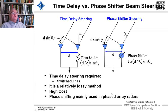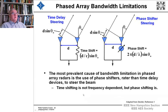In the early days before phase shifter technology really came into its own, radars were built with time delay steering. Also, the most prevalent cause of bandwidth limitation in phased array radars is the use of phase shifters rather than time delay devices to steer the beam. Time shifting is not frequency dependent, but phase shifting is.